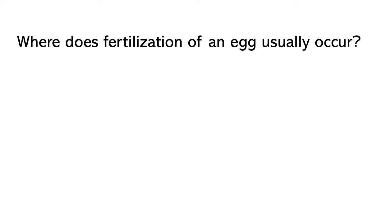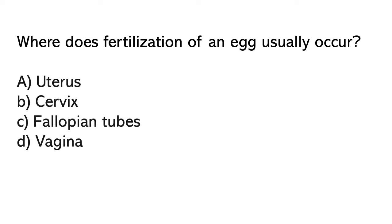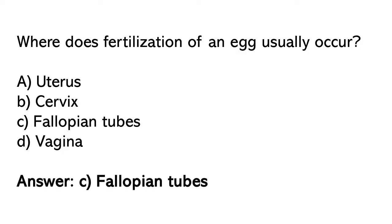Where does the fertilization of an egg usually occur? Options: A) Uterus, B) Cervix, C) Fallopian tubes, D) Vagina. So the correct answer is option C. Fallopian tubes.